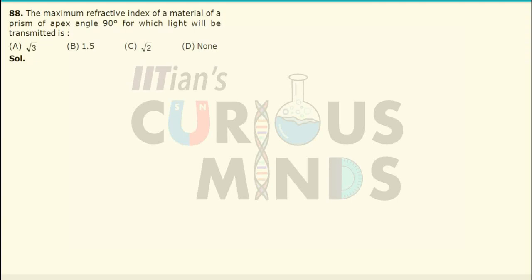The maximum refractive index of a material of a prism with apex angle 90 degrees, that is the angle of prism is equal to 90 degrees, for which the light should be transmitted.